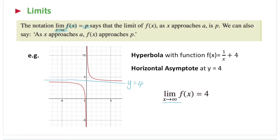This makes sense because if you look at the x values, as the x value gets greater and greater, the line gets closer and closer to the horizontal asymptote. So that means as x approaches positive infinity, this function approaches a constant value y equals 4.